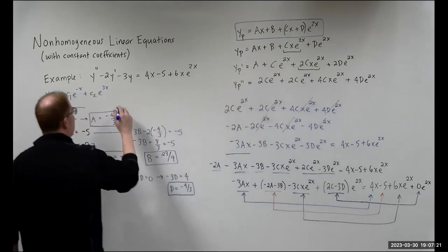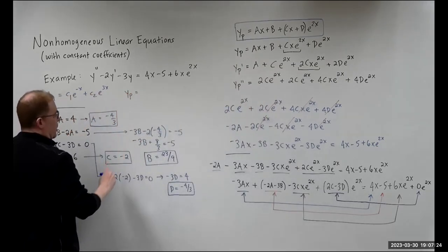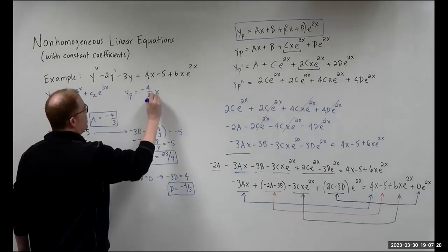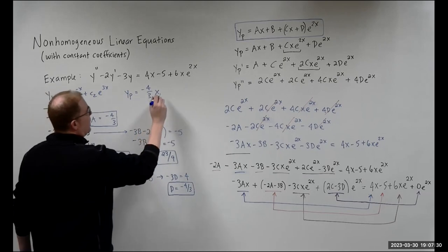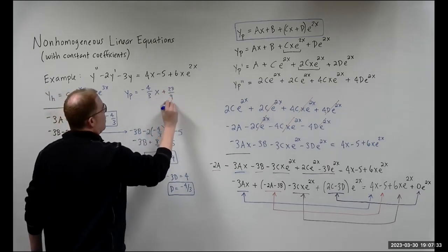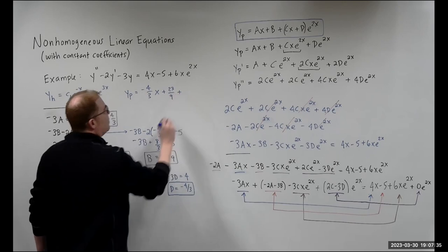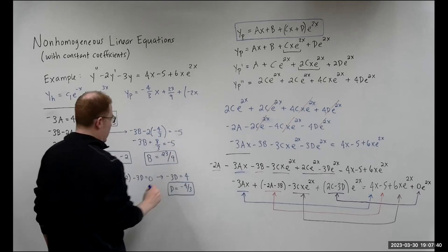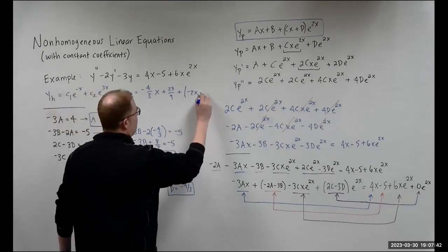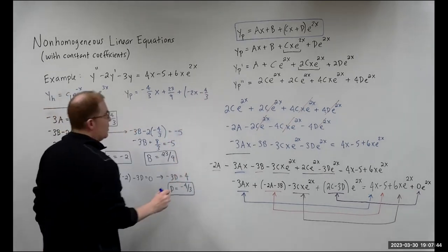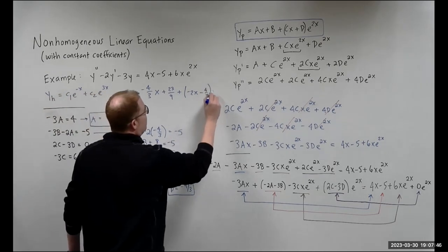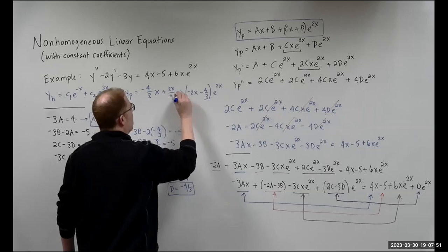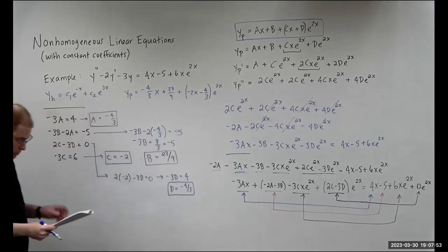Plugging all coefficients back in, y_p = (-4/3)x + 23/9 + (-2x - 4/3)e^(2x).